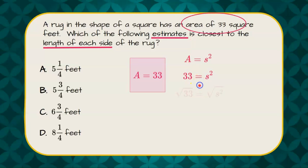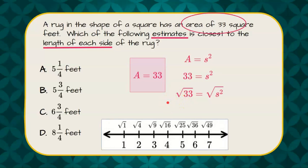So now to solve this equation, we need to find the square root of each side. The square root of s squared is easy, that's s, but we don't have a calculator. So to estimate the square root of 33, I'm going to make a number line.